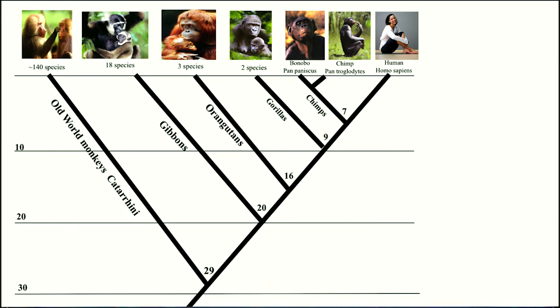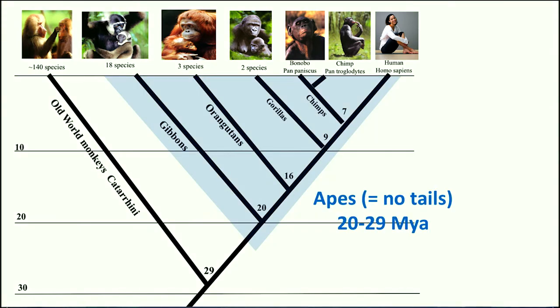So when did those things happen? When did we lose our tail? Let's look at this phylogenetic tree again. Between about 29 million years ago and 20 million years ago monkeys lost their tails and became apes.